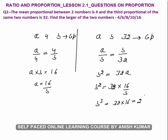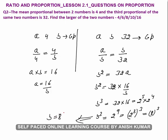32 is 2 to the power 5 and 16 is 2 to the power 4, so b cubed equals 2 to the power 9, which is 8 cubed. Therefore b equals 8. We need to find the larger of the two numbers — the larger number is b, and its value is 8. Our answer is 8.